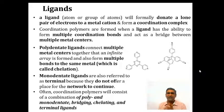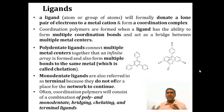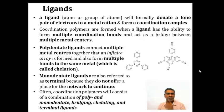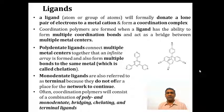Polydentate ligands — unidentate means one heteroatom, bidentate means two, tridentate means three, and more than that is polydentate — connect multiple metal centers together so that an infinite array is formed, and multiple bonds to the same metal is called chelation. Monodentate ligands like pyridine are referred to as terminal because they do not offer a place for the network to continue. When you have two nitrogen atoms as in bipyridine or pyrazine with a divalent metal ion, they can form polymeric structures. Coordination polymers often consist of a combination of poly- and monodentate bridging, chelating and terminal ligands.